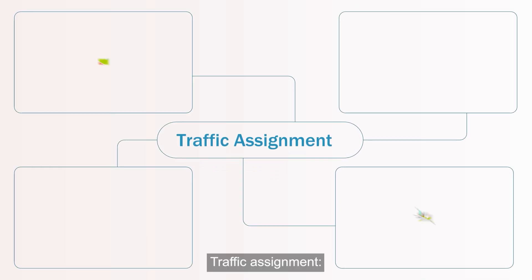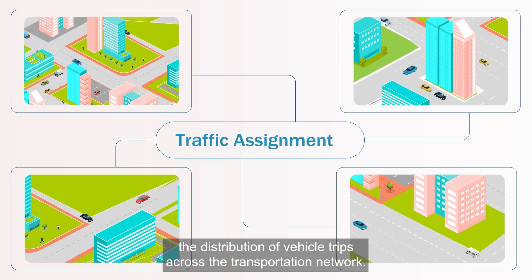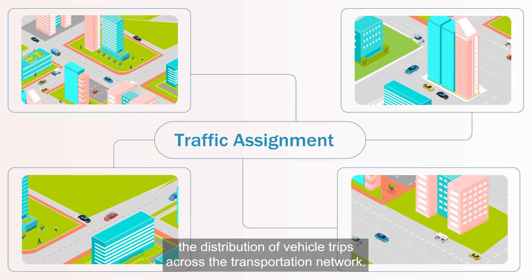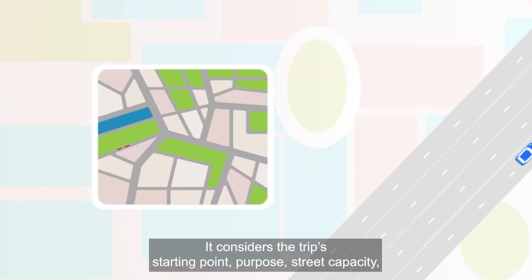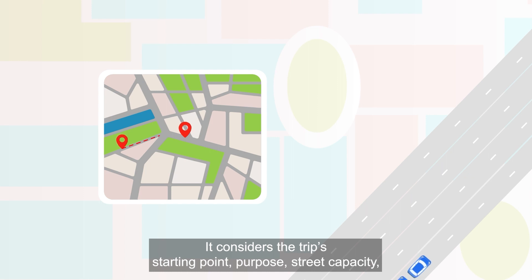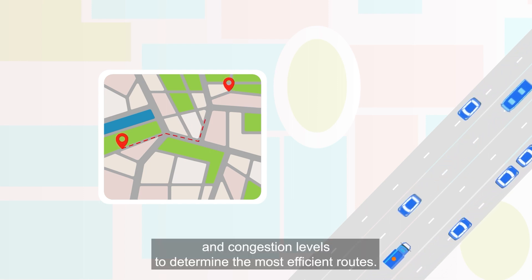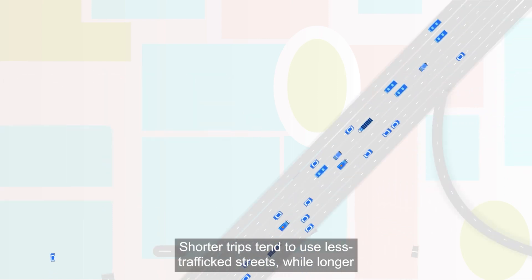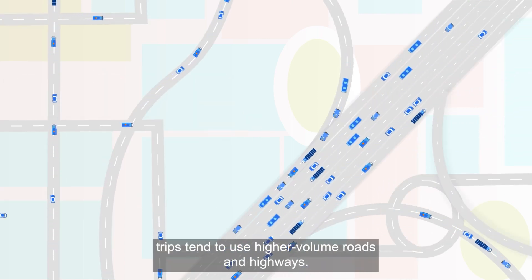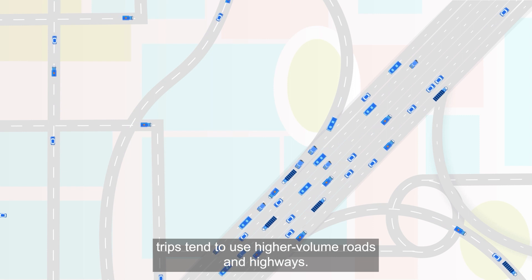Traffic assignment: this final step predicts the distribution of vehicle trips across the transportation network. It considers the trip's starting point, purpose, street capacity, and congestion levels to determine the most efficient routes. Shorter trips tend to use less trafficked streets, while longer trips tend to use higher volume roads and highways.